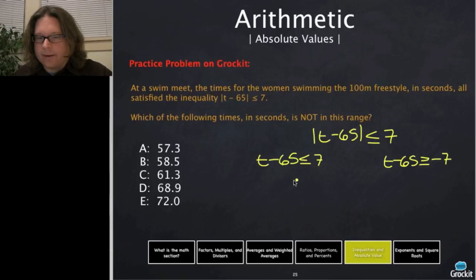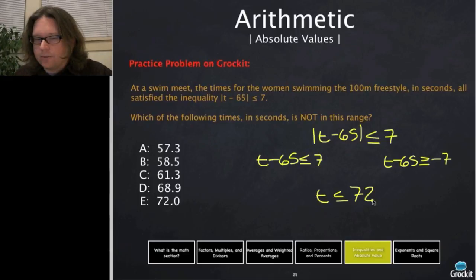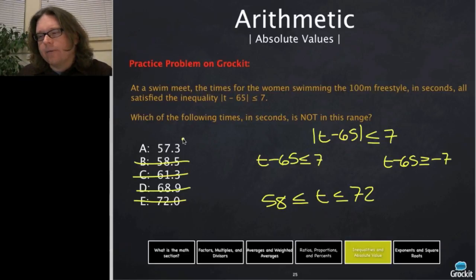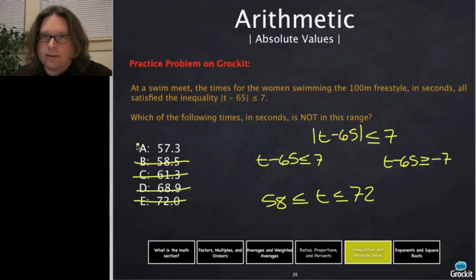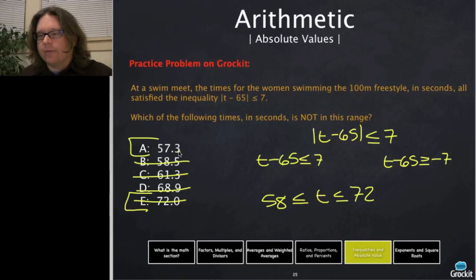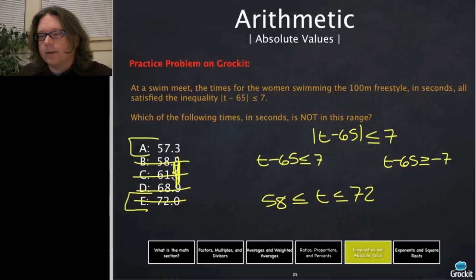Practice problem: if x⁴ = y and y² = z, what is z? Working backwards: z = y², and y = x⁴, so z = (x⁴)² = x^(4×2) = x⁸. When you raise a power to a power, multiply the exponents. Answer choice A: z = x⁸.